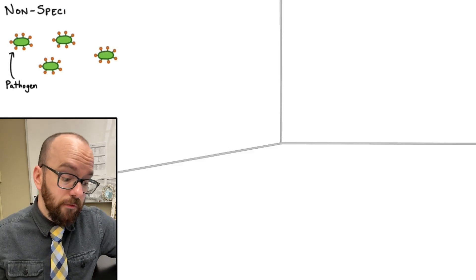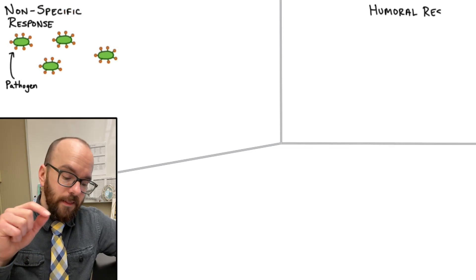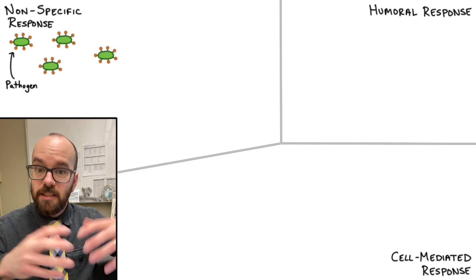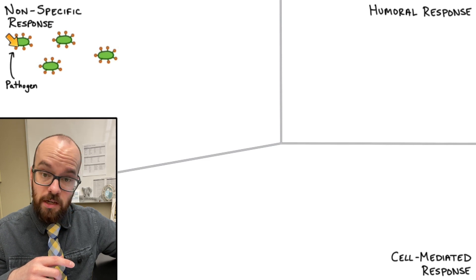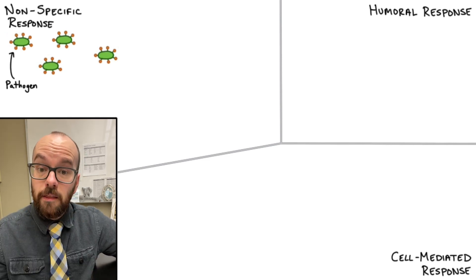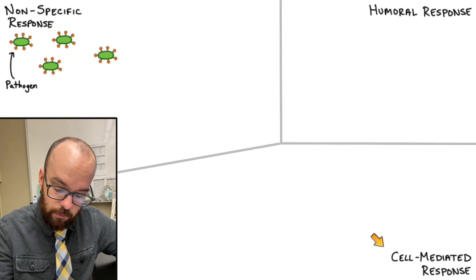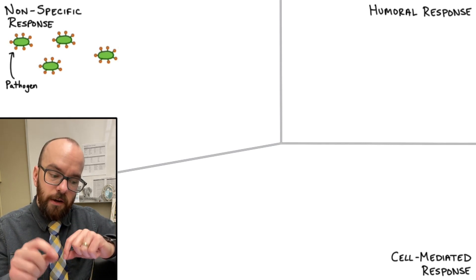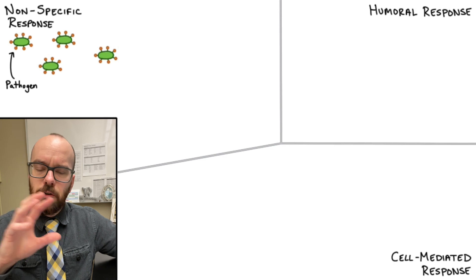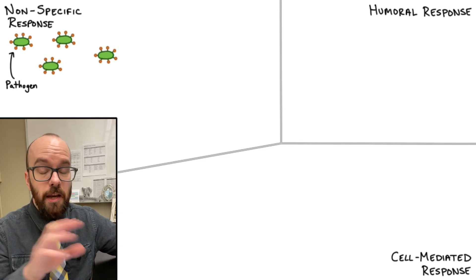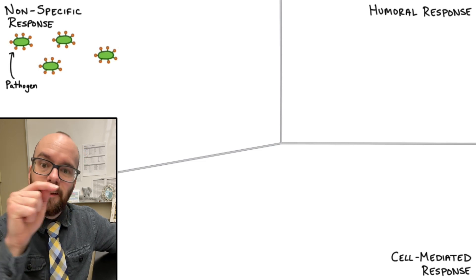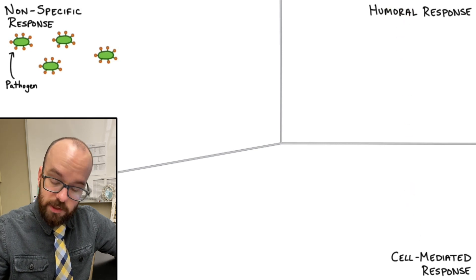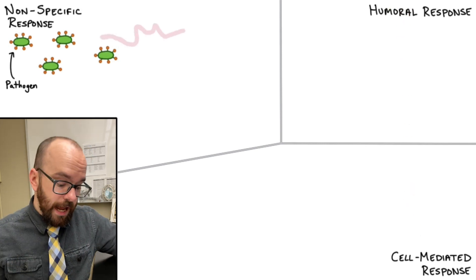In this diagram, the top left shows a non-specific response — meaning that part would happen no matter what pathogen entered our body, whether it's this one, COVID, chickenpox, or anything else. Then we have a humoral response and a cell-mediated response, both of which are specific immune responses. We're going to develop cells specific to this pathogen, trained to fight off just this one. This is all about converting from our non-specific response to our more effective specific responses.